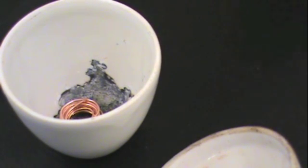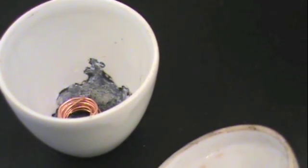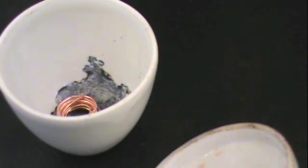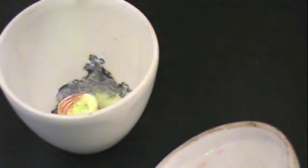Weigh a crucible and lid, and then obtain a piece of copper and coil it around a pencil to get it into the shape shown here. You will then re-weigh it.